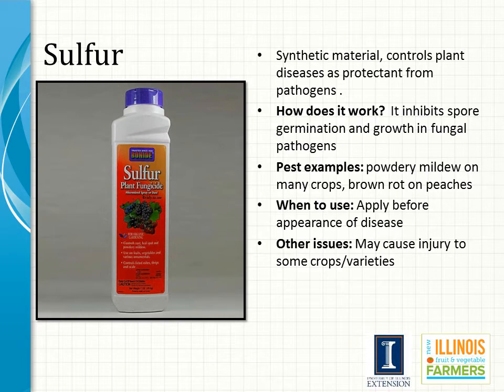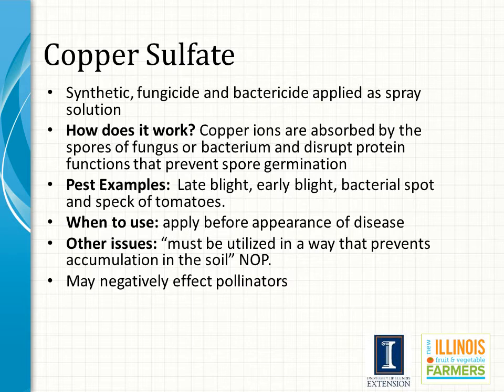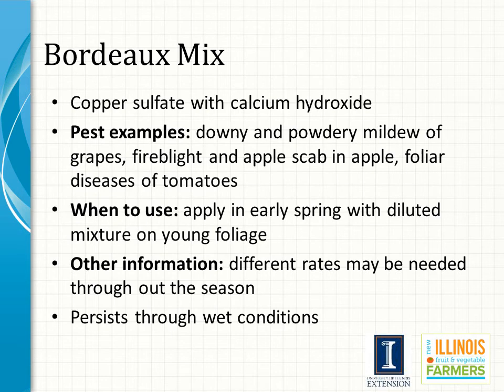A word of caution with sulfur is that it may cause injury to some crops, and some varieties or cultivars may be more susceptible. Copper sulfate is a synthetic fungicide and bactericide applied as a spray solution. Copper ions are absorbed by the spores of the fungus or bacterium, which disrupts the protein functions that would have allowed for spore germination. Some examples of diseases targeted include late blight, early blight, bacterial spot, and bacterial speck on tomato. Copper sulfate should also be applied before the appearance of the disease if possible. The National Organic Program stresses that you should be mindful of applying copper sulfate so that it prevents ions from accumulating into the soil. Additionally, copper sulfate has shown adverse effects on pollinators.